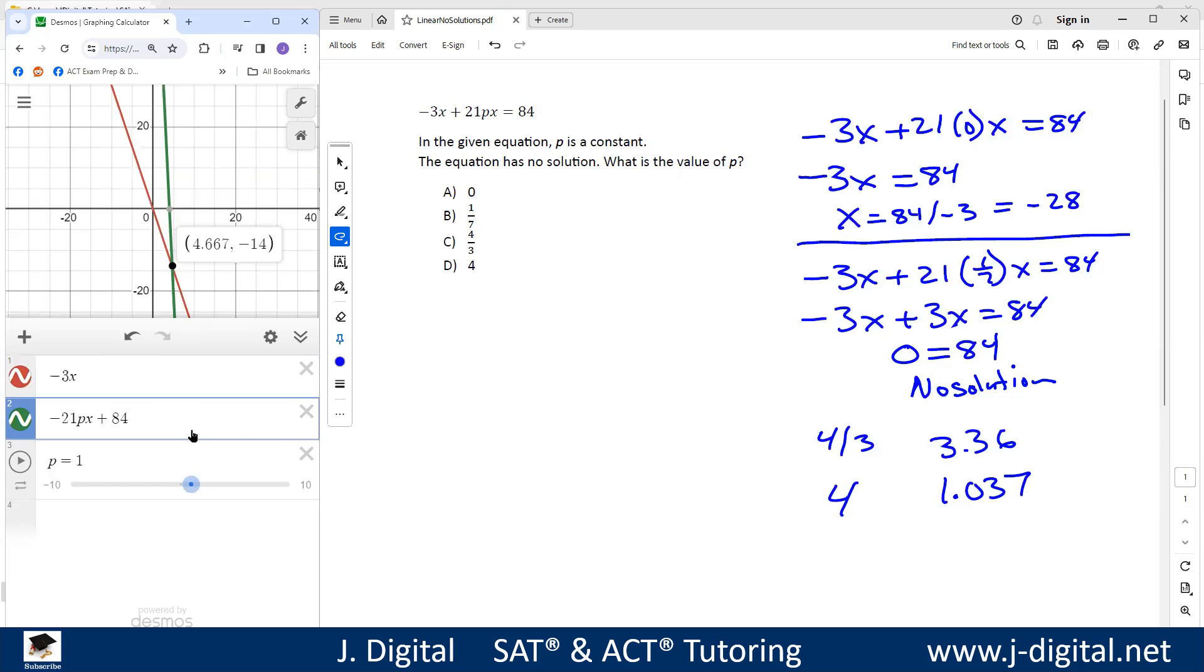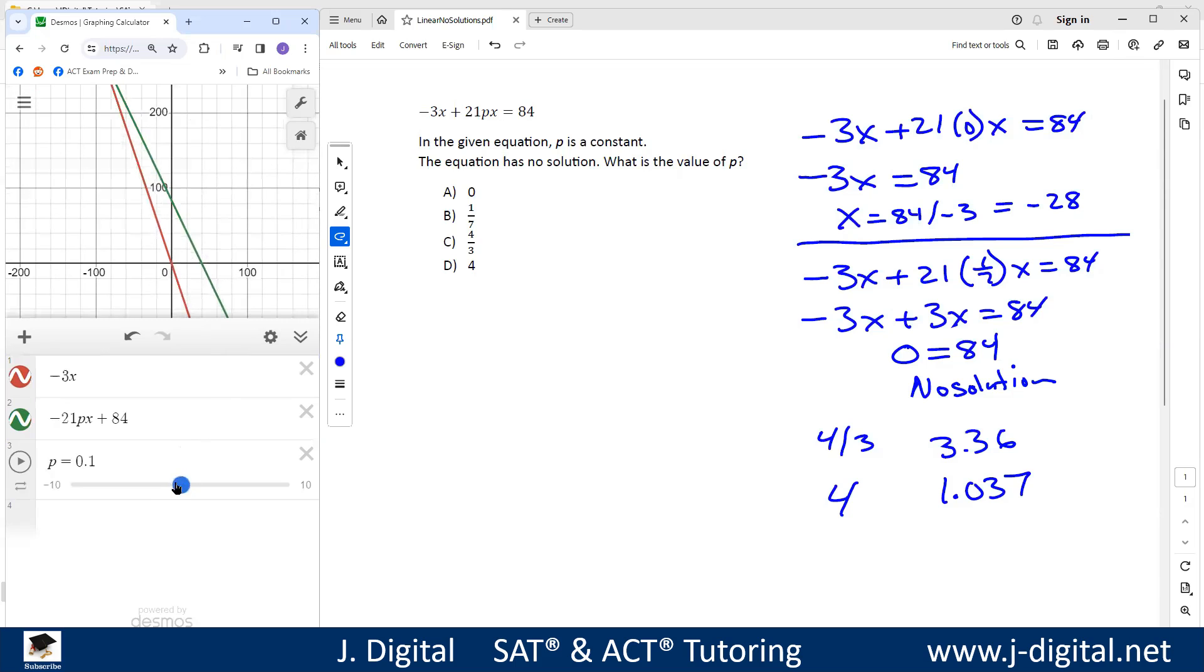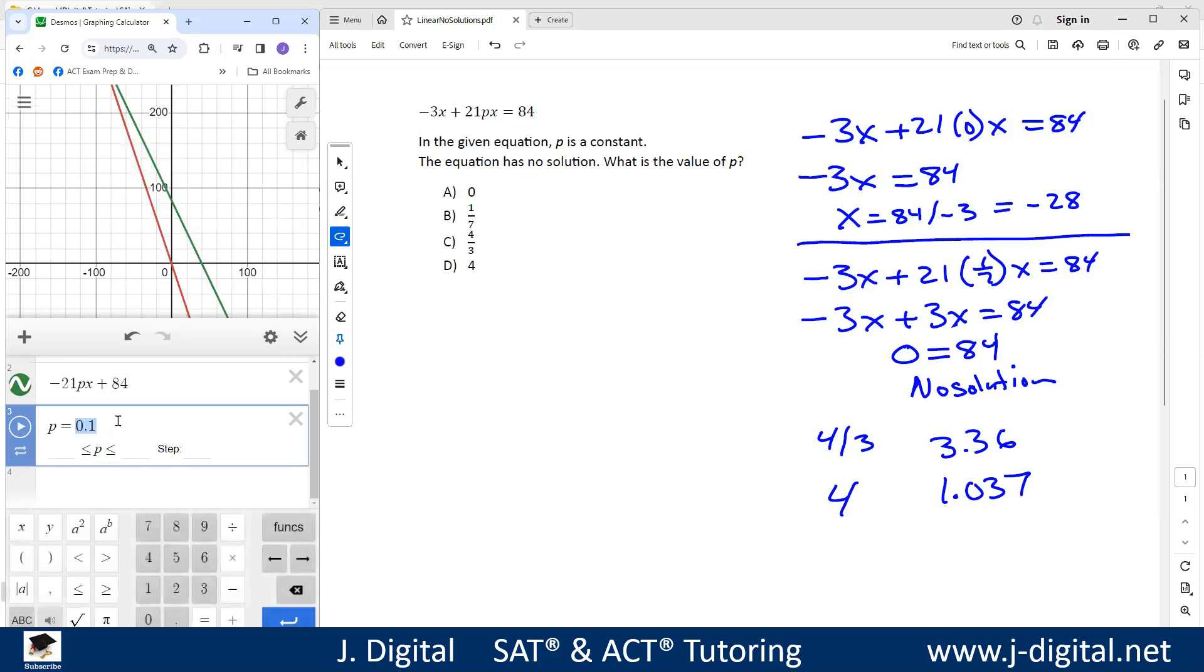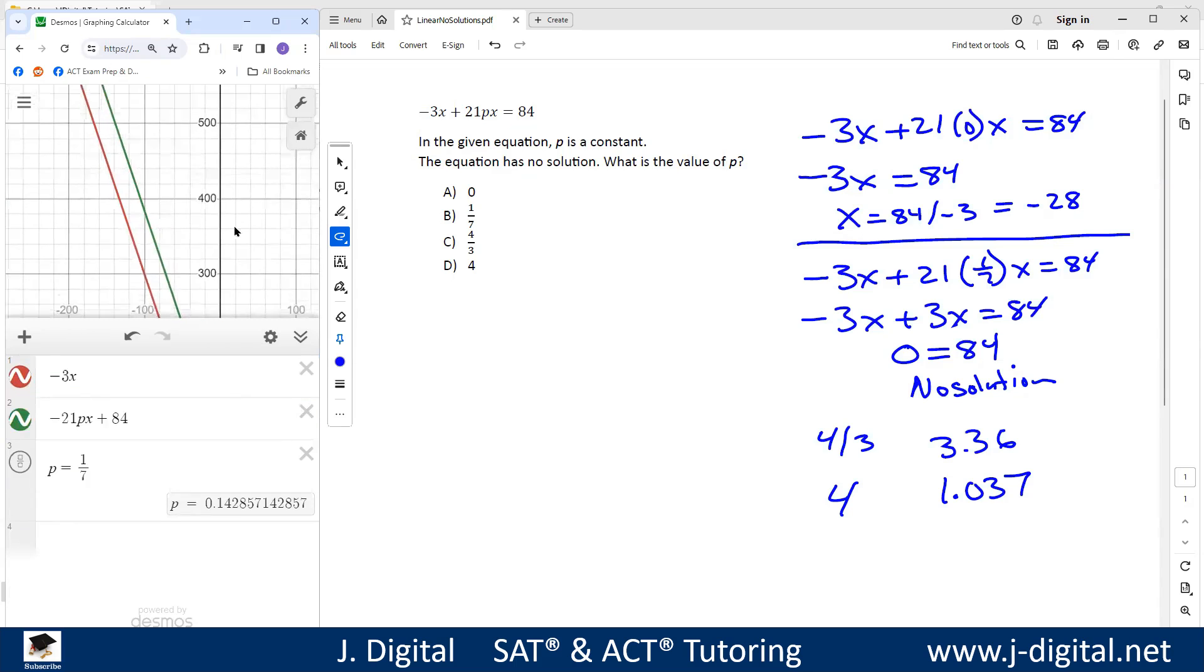Now, this is a little bit harder because we know the answer is 1/7. So if I change my slider, we can see the line moving at 0.1. Zoom in a little bit. We can tell it's not parallel. 0.2 is not parallel either, so it's kind of in between 0.1 and 0.2. But we can put in our answer choices. We know it's 1/7, so I'll just put that in. And then now you can tell that those two lines are parallel.